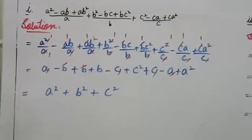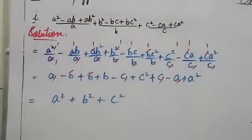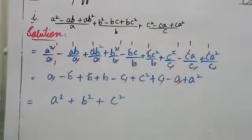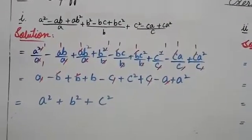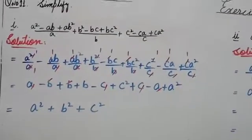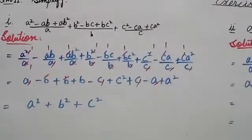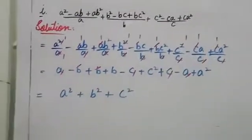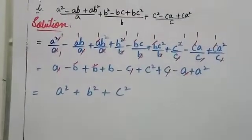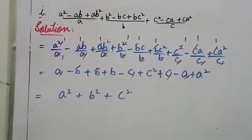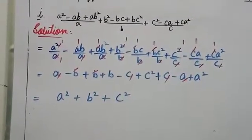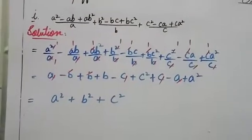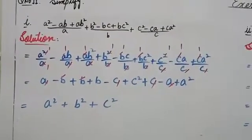There are three fractions, so one by one we will divide. The denominators are a, b, and c respectively. When you divide by a: a² by a, minus ab by a, plus ab² by a.